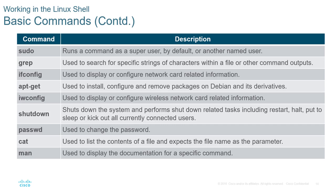For Debian-based Linux, apt-get followed by the package name installs software. iwconfig is for wireless. shutdown changes the system state. passwd changes the password. cat concatenates or reads a file. man displays the manual or documentation. The goal here is not to memorize what each command does — we have labs covering navigation. It's more important to get a feel for what the basic commands are and their purpose within the context of using Linux in a SOC.